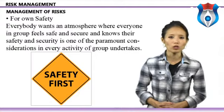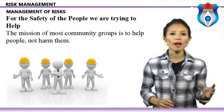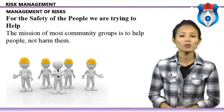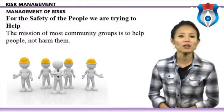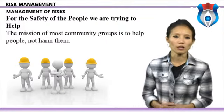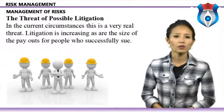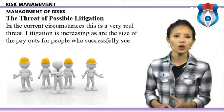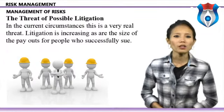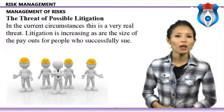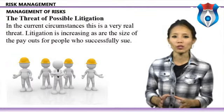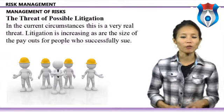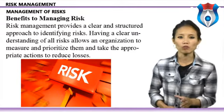A group that prioritizes safety normally boasts a happy, loyal, and effective membership or volunteer force. For the safety of the people you serve, the mission of most community groups is to help people, not harm them. Regarding litigation: in current circumstances this is a very real threat — litigation is increasing, as are the sizes of payouts. By setting up a risk management strategy, organizations can reduce the chance of costly legal action.